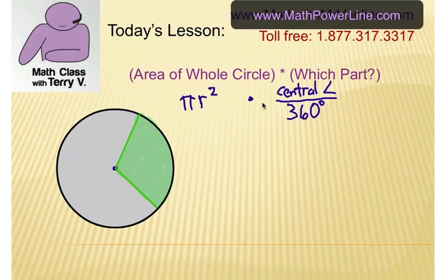In other words, if I am going 180 out of 360, that would be one half of the circle, okay? So we just take half of the area. But in this case, let's do a real example.